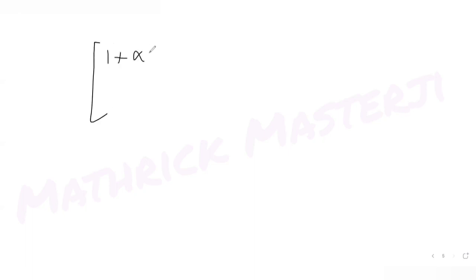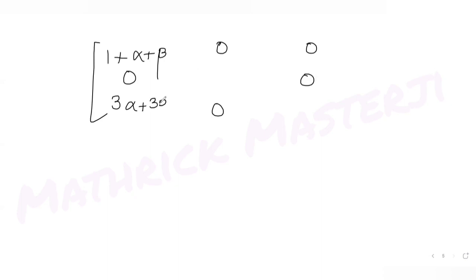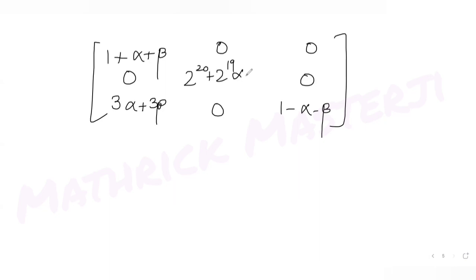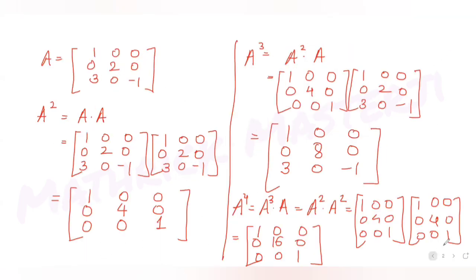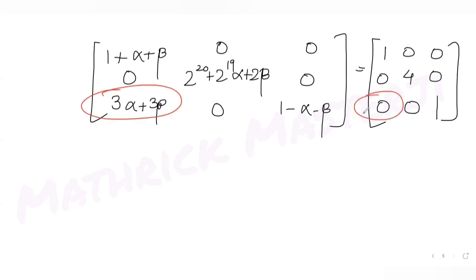Setting the left-hand side equal to the right-hand side matrix 1 0 0 / 0 4 0 / 0 0 1, I can equate: from the third row first element, 3 alpha plus 3 beta equals 0, so 3(alpha plus beta) equals 0, meaning alpha plus beta equals 0, or beta equals minus alpha. The middle element gives 2 raised to 20 plus 2 raised to 19 times alpha plus 2 beta equals 4.